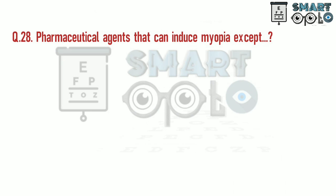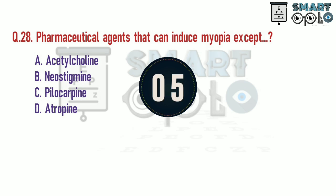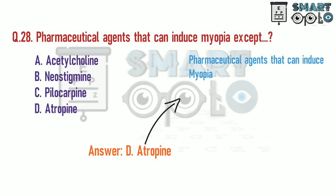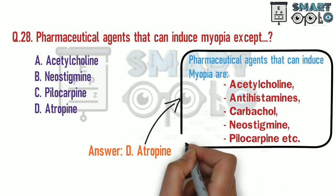Q28. Pharmaceutical agents that can induce myopia, except: A. Acetylcholine. B. Neostigmine. C. Pilocarpine. D. Atropine. Pharmaceutical agents that can induce myopia include Acetylcholine, Antihistamine, Carbachol, Neostigmine, Pilocarpine, etc.